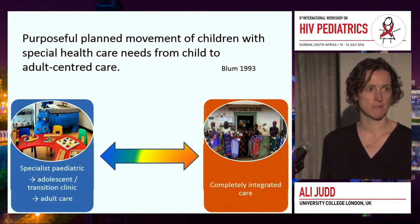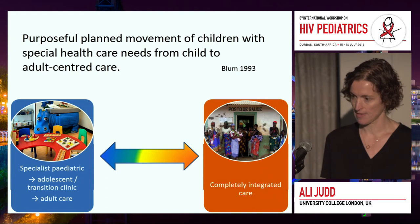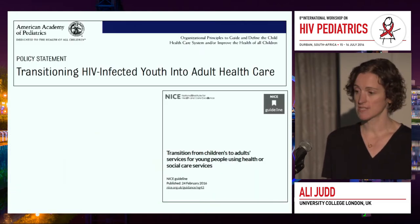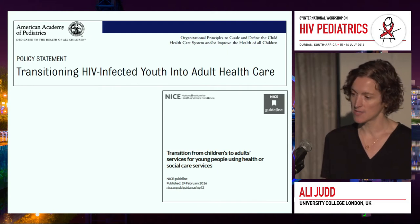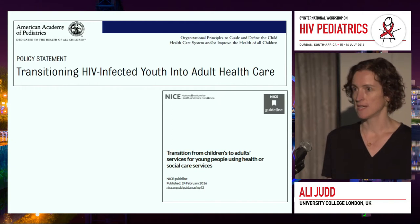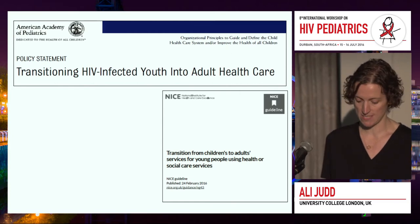So increased independence from parents, leaving school, starting work, perhaps leaving home. We now have some policy documents on how to do transitions. The top one is the American Academy of Pediatrics policy statement on transitioning HIV-infected youth. The lower one is guidelines from the UK, from NICE, and this covers transitioning children to adult care across chronic diseases.